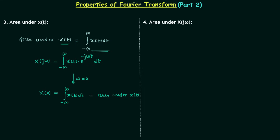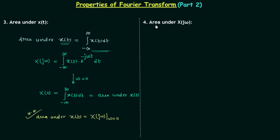To finalize this third property: the area under the time domain signal x(t) is equal to its Fourier transform X(jω) evaluated when ω is equal to zero. Now we will understand the fourth property, area under X(jω).